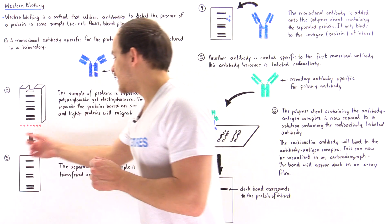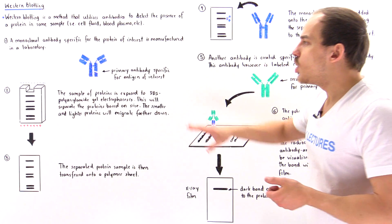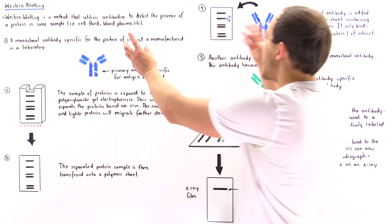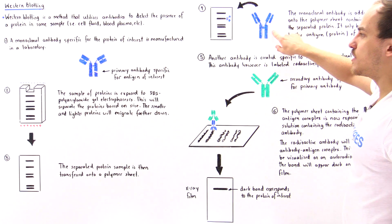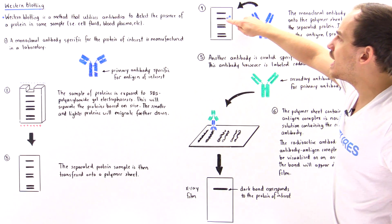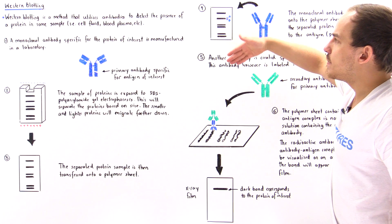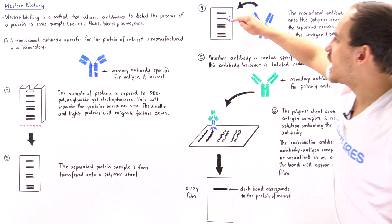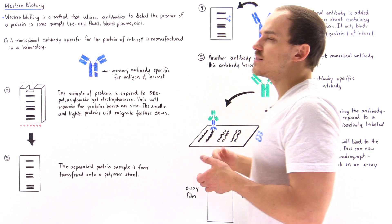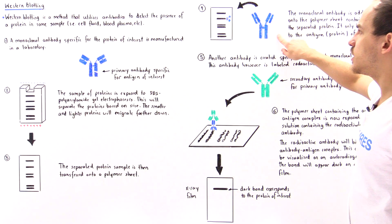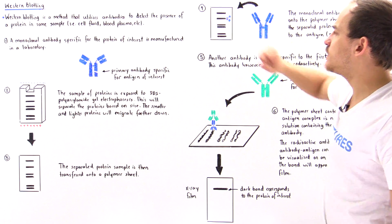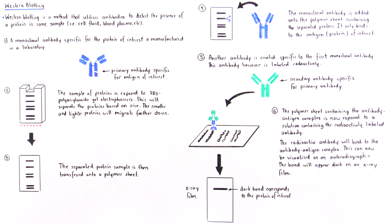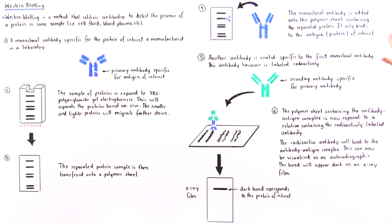The next step is to take this polymer sheet and mix it with the primary antibody formed in the previous step. Once mixed, the primary antibody will bind onto the proteins found in one specific band — the band containing the antigen it was designed for. Suppose it's the second band from the top that contains the protein we want to study. The monoclonal antibody binds only to that antigen, the protein we are actually interested in.